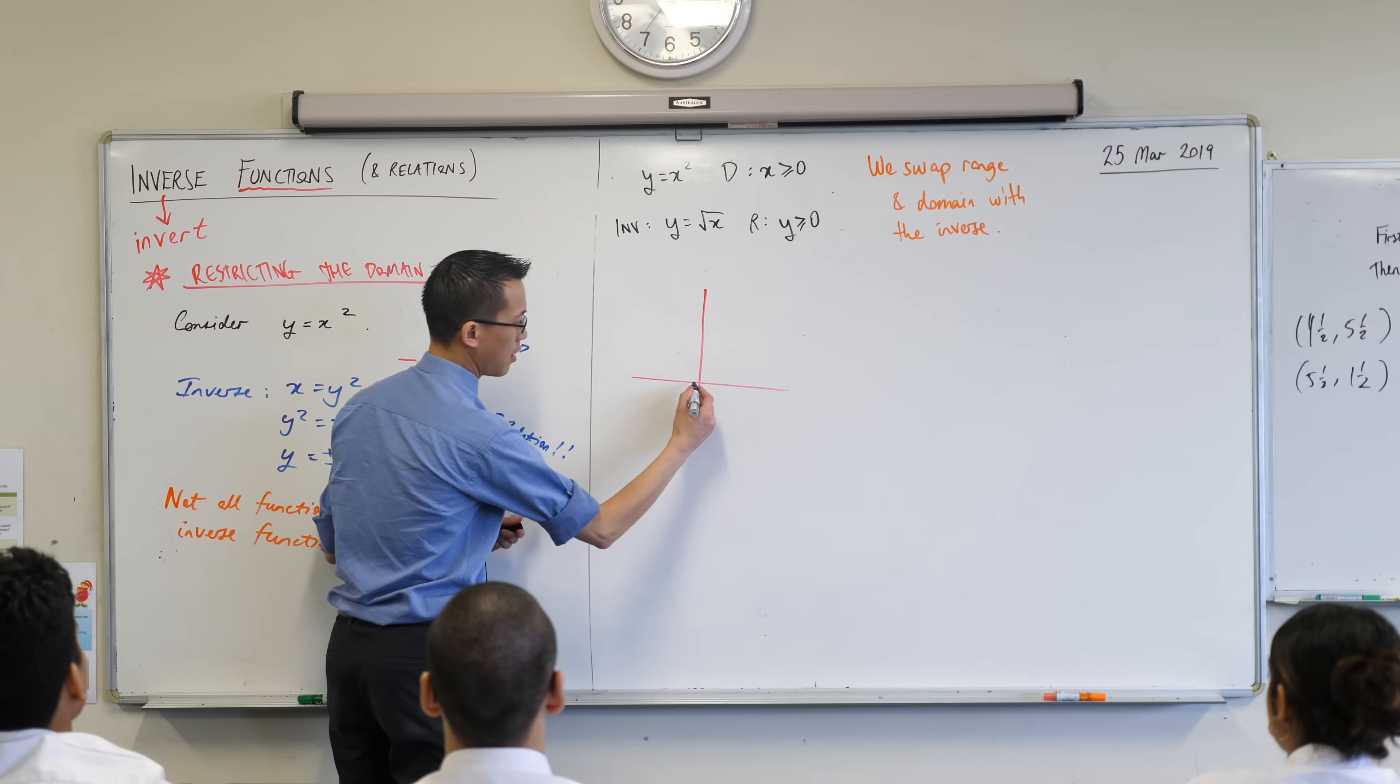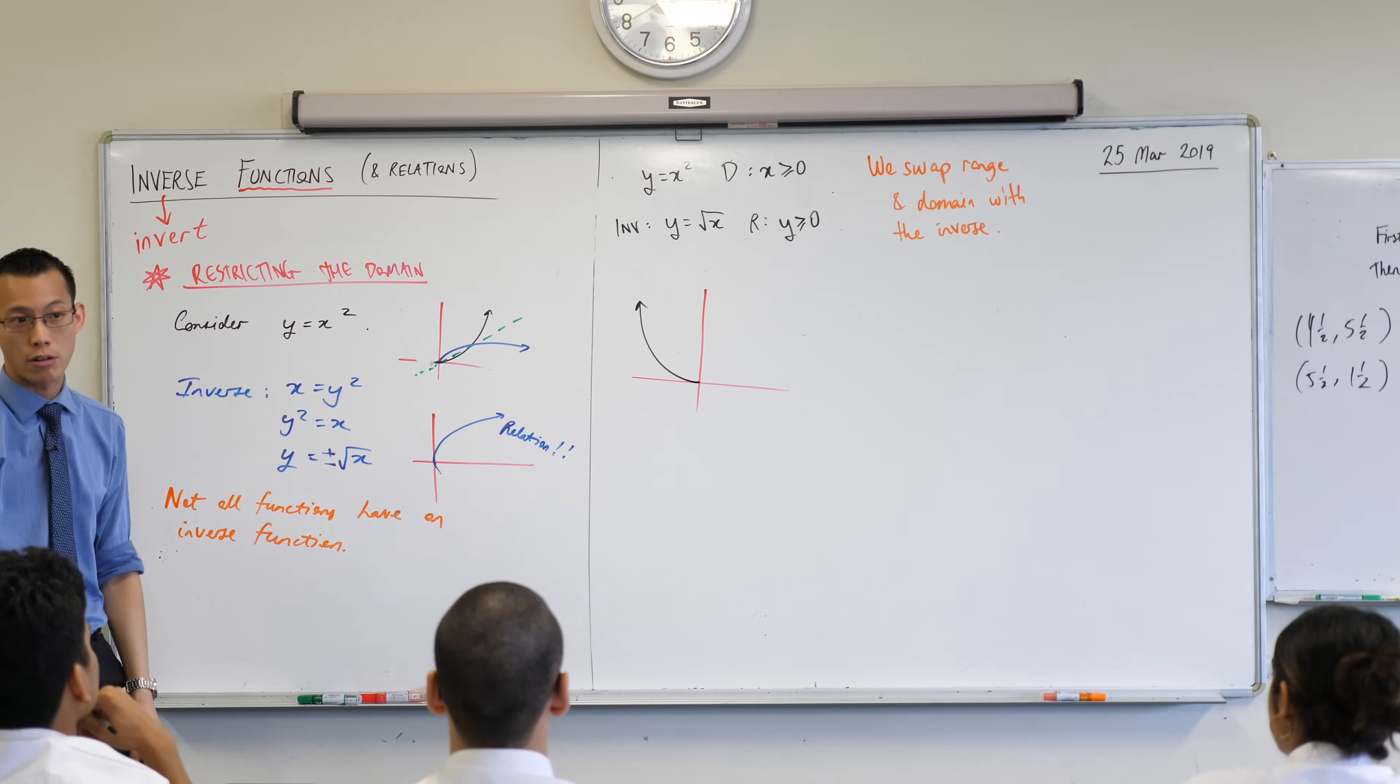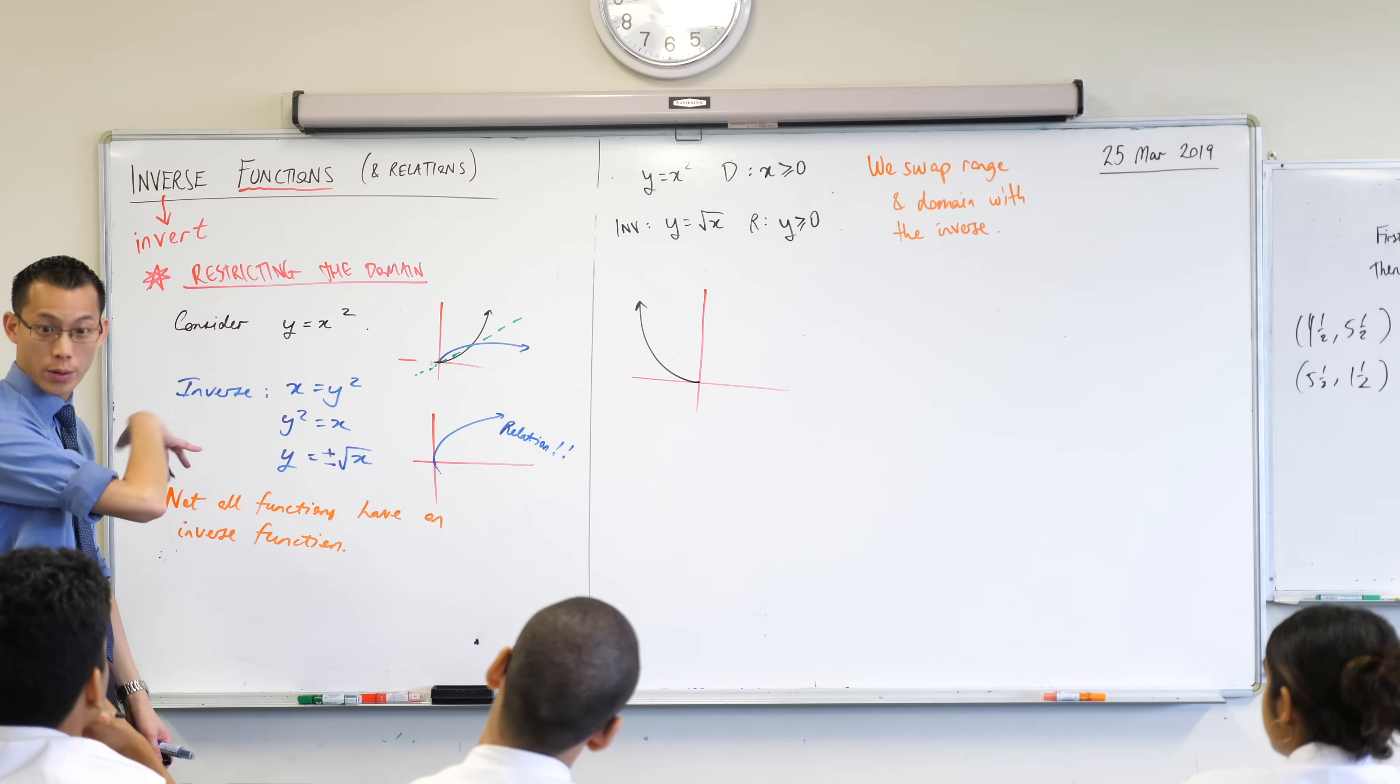Like, this part over here, there's another restriction. What's the domain of this graph over here? X is less than or equal to zero.